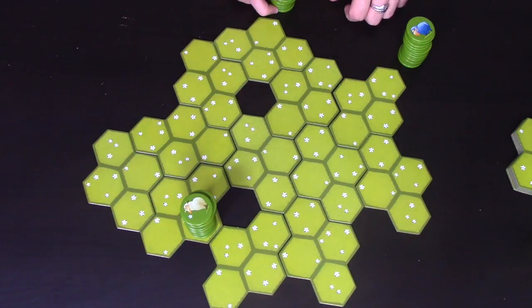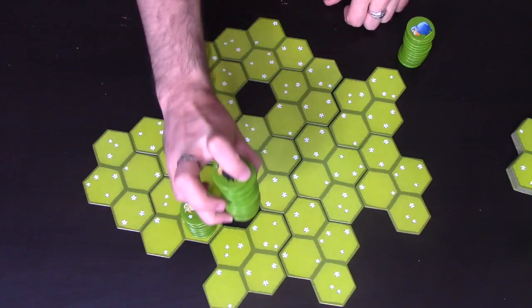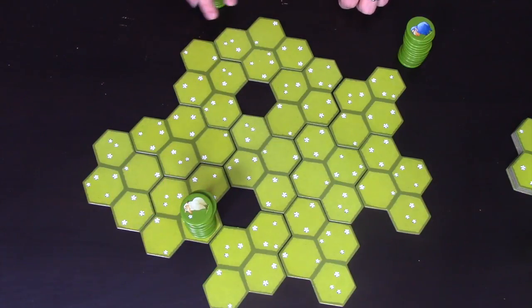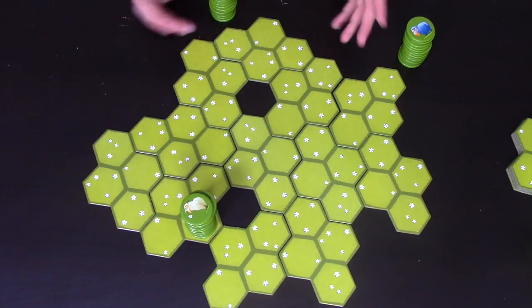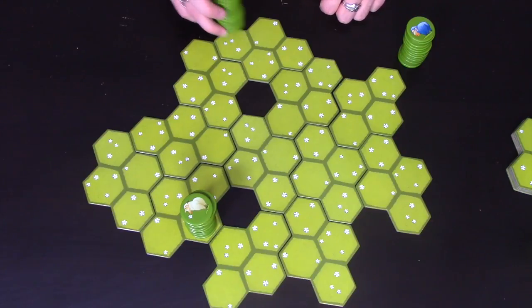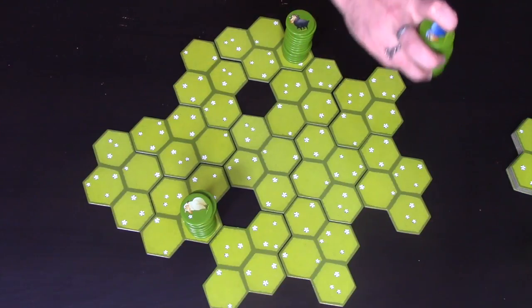On black's turn, there is no reason that black can't play either side of white, but you kind of want to stay away from the people, because they're going to start blocking you in. So black might place theirs here, blue might place theirs here.